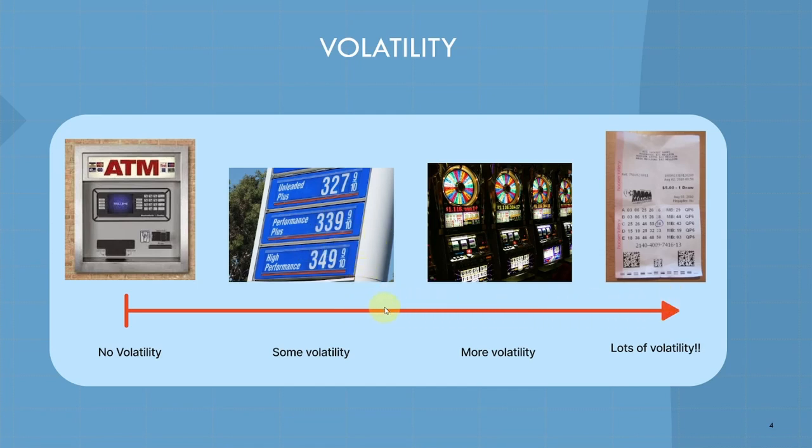If we move further along to the right, we get to casino games. These are a lot more volatile than the day to day change in prices for gas. And as high as we can go is lottery tickets. 999,000 times out of a million, you're not going to win anything out of a lottery ticket. But every once in a while, you'll get that million dollar payout. This is about as volatile as it gets.